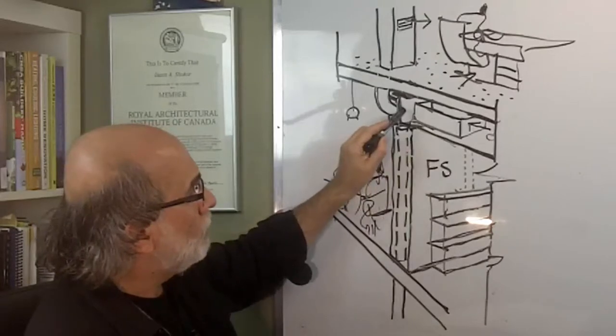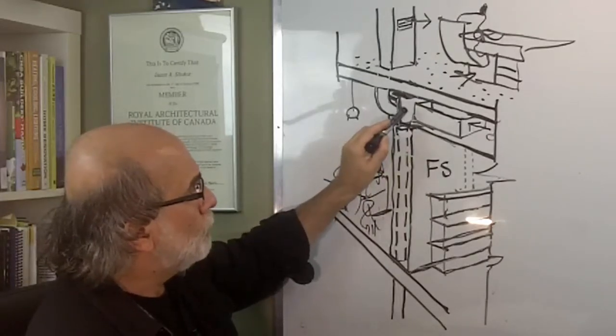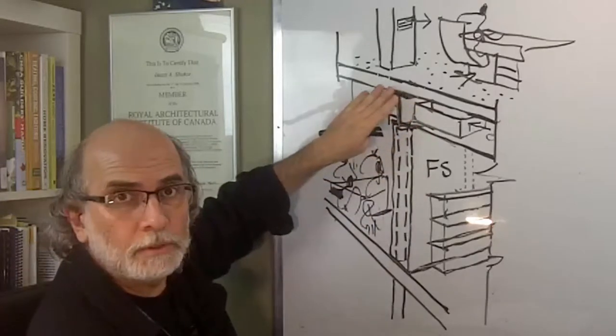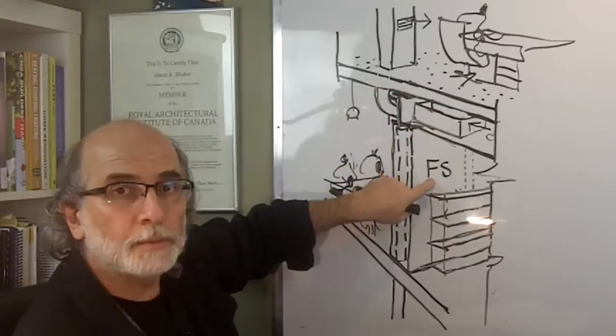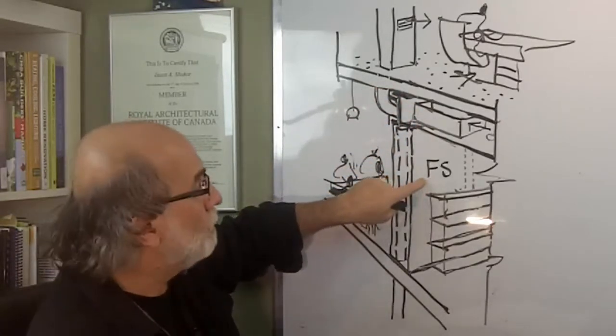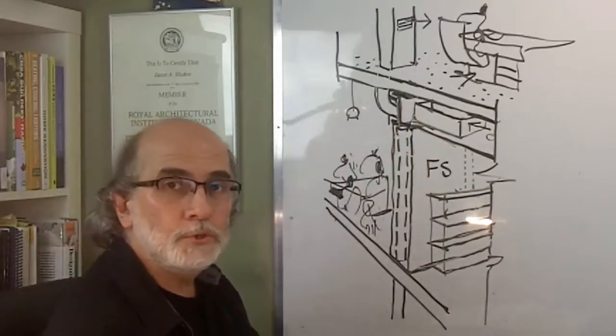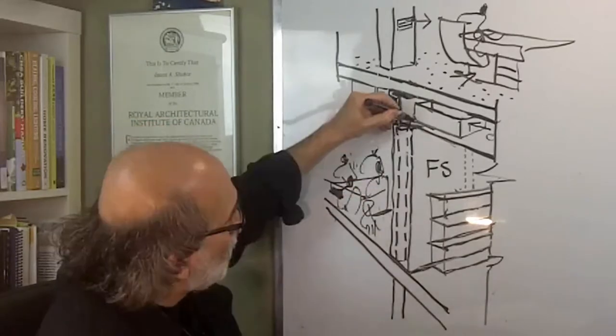This air duct, when it penetrates the beam, the beam here is considered as part of the fire separation. Therefore, any penetration to the beam would require a closure.